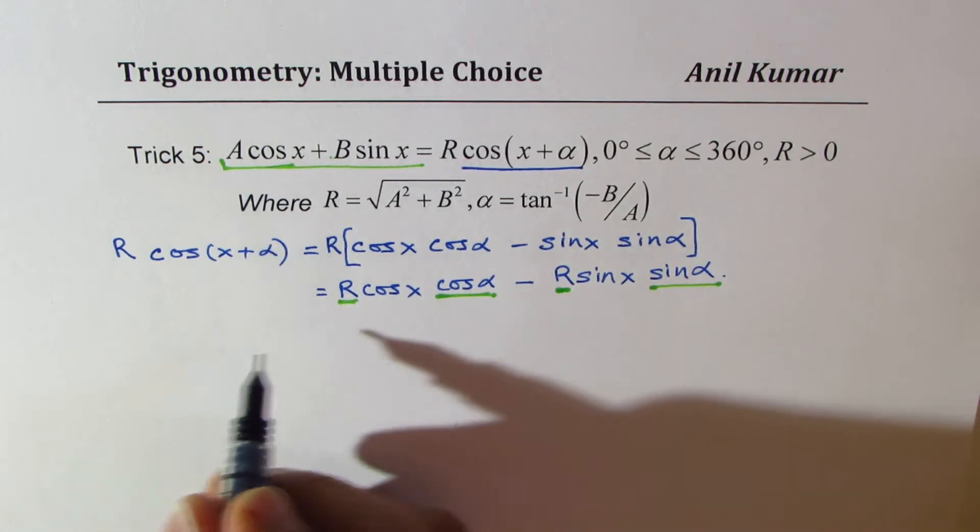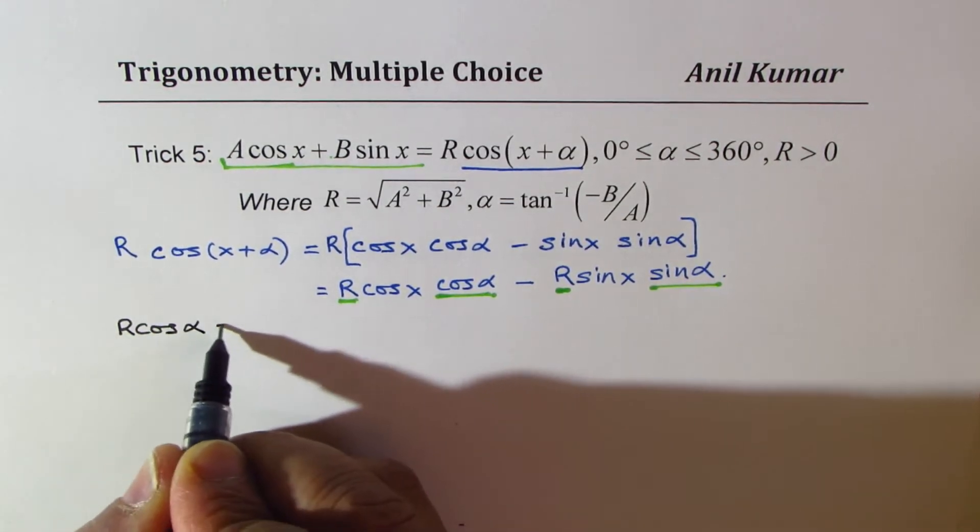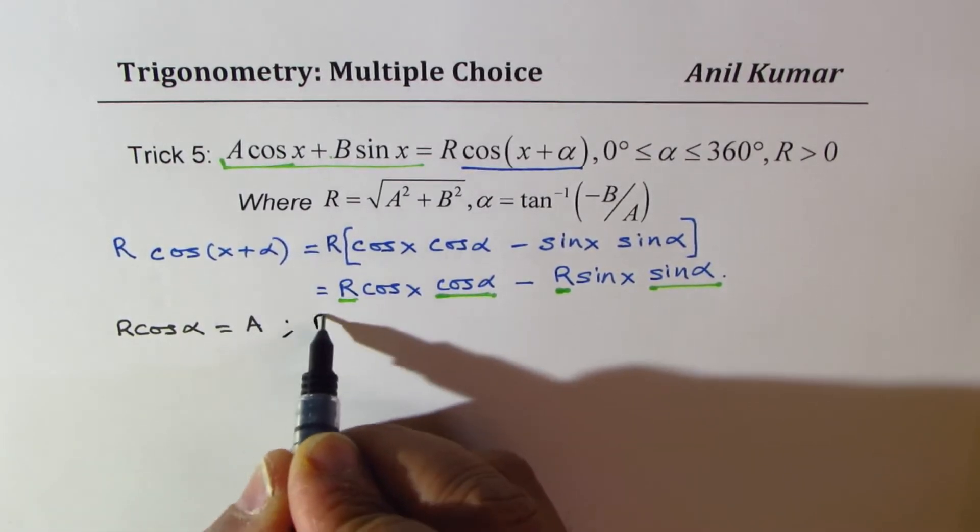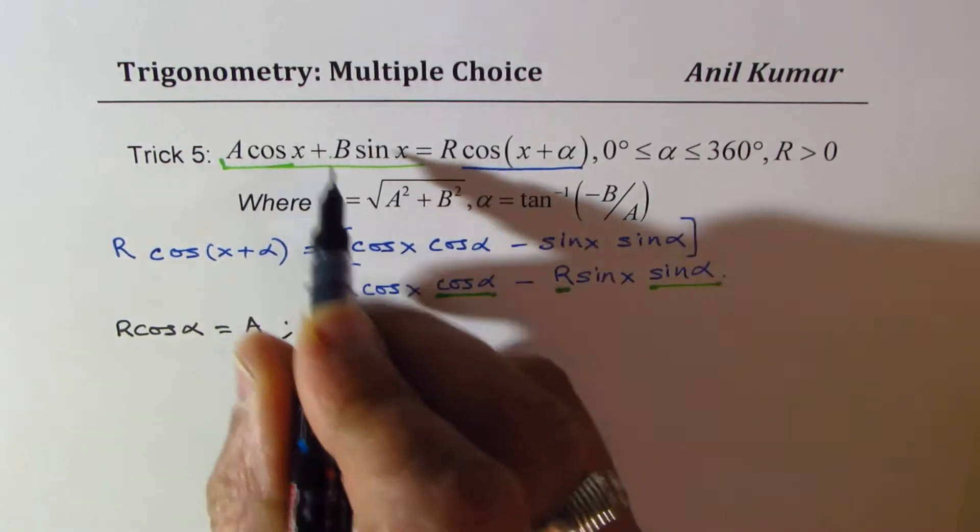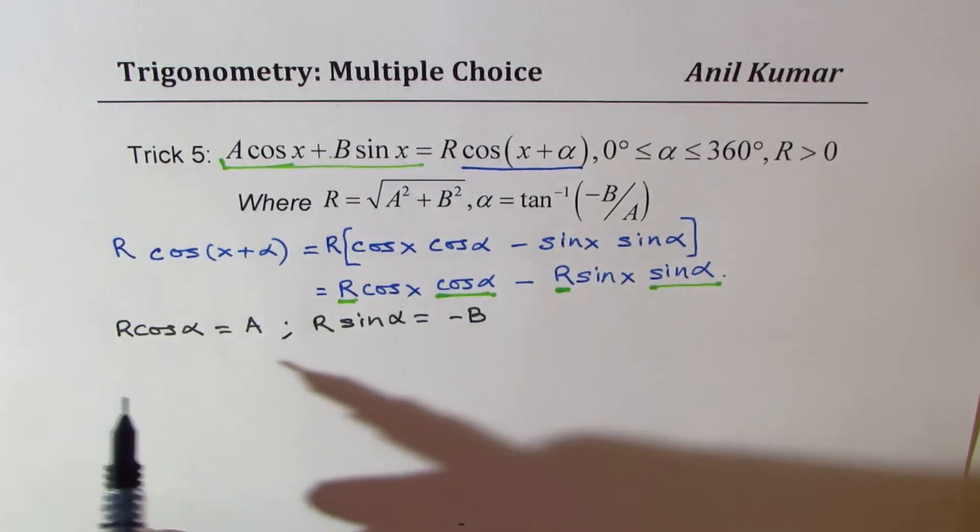So comparing, we can say R cos alpha equals A and R sin alpha equals minus B. So if I square them, I get R squared cos squared alpha equals A squared.